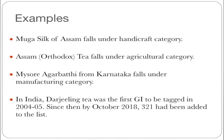Our Muga Silk of Assam is well-known. We have a geographical indication added to it. Another example is Mysore Agarbatti from Karnataka, which also has a geographical indication.